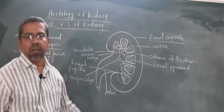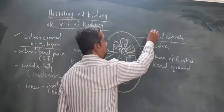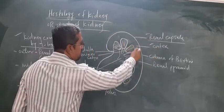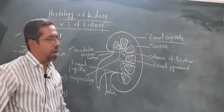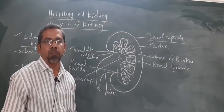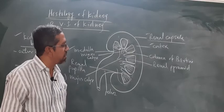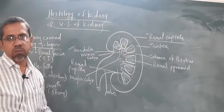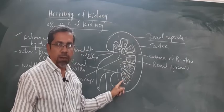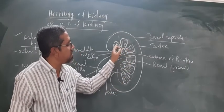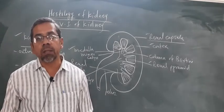जब kidney का vertical section लेते हैं तो kidney clearly दो different parts दिखाती है। Renal capsule के बाद outer part को cortex कहते हैं, और middle inner part को medulla कहा जाता है। Medulla के अंदर highly complicated parts present होते हैं। Figure में देख सकते हैं — medulla के अंदर at certain intervals pyramid-like structures present हैं, जिन्हें renal pyramid कहा जाता है।